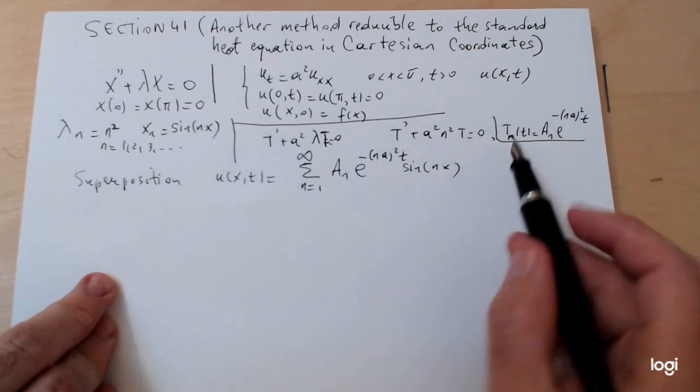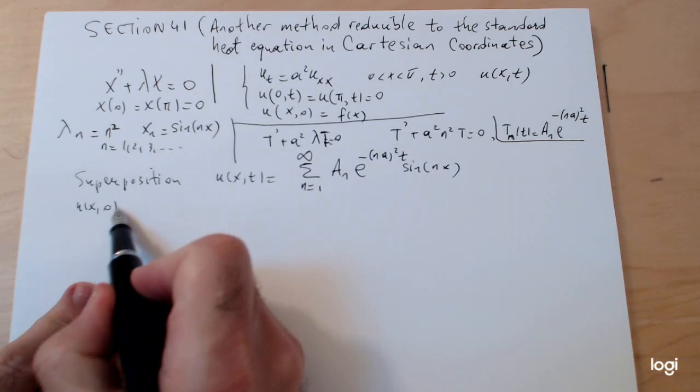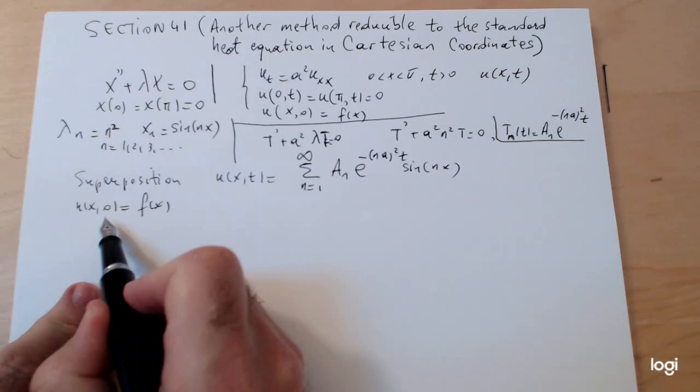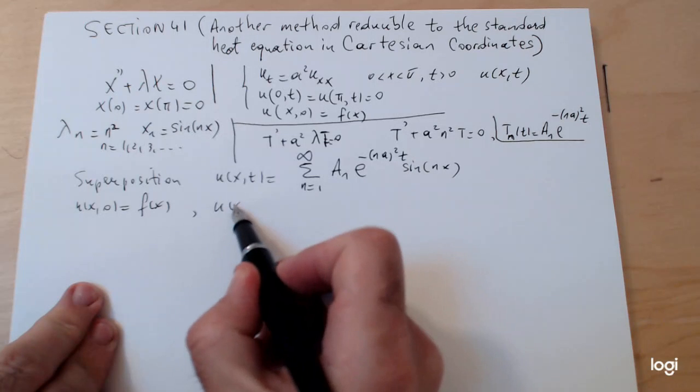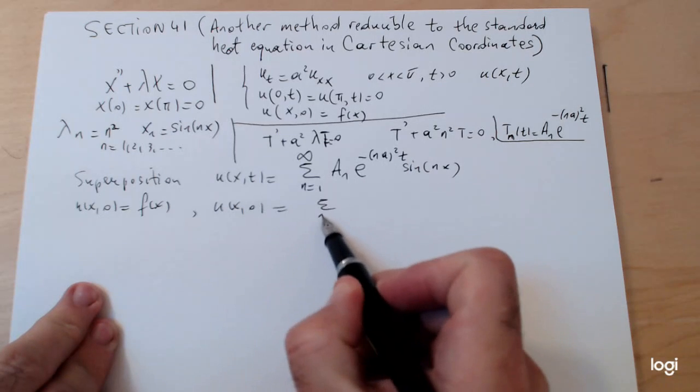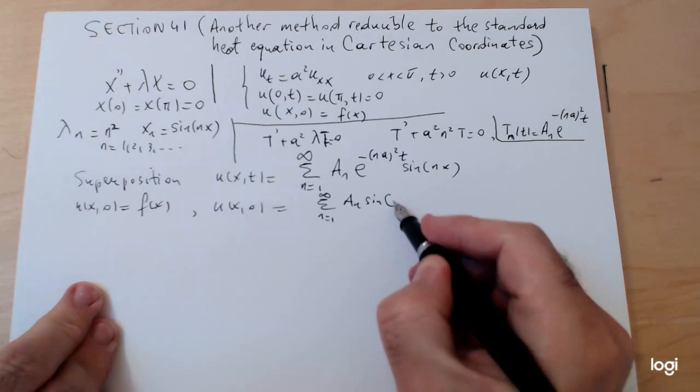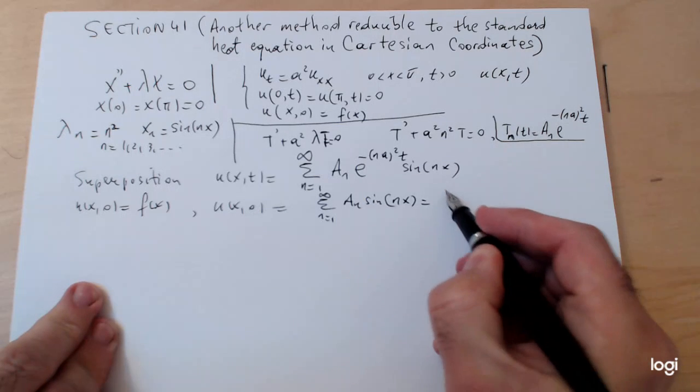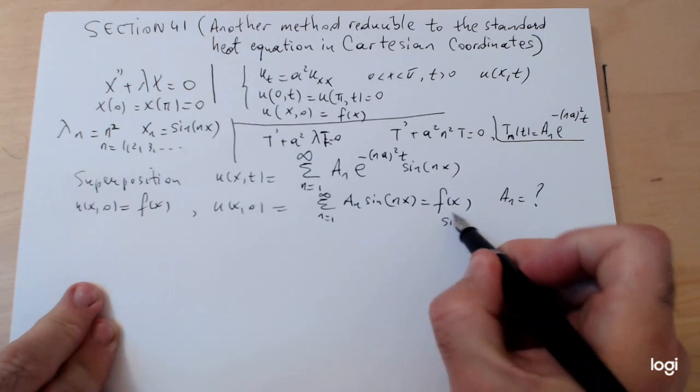The only difference is that eigenvalues and eigenfunctions will be different in different contexts. At the end, the last step when you impose the condition u(x,0) = f(x), that means t is replaced by zero, so e^0 becomes one, and so you match a Fourier sine series with the given function.